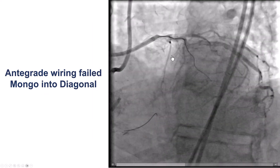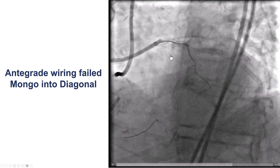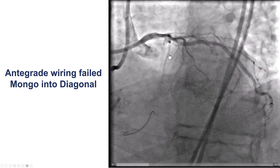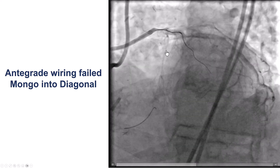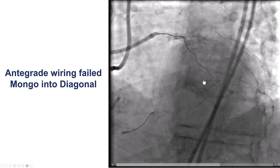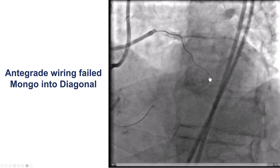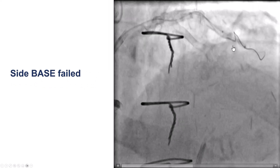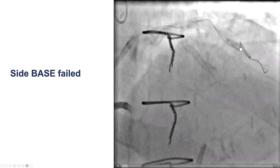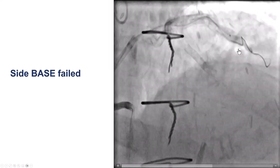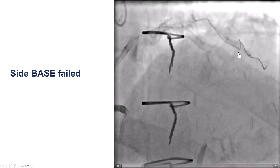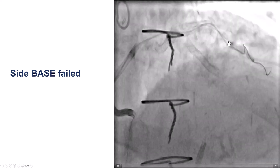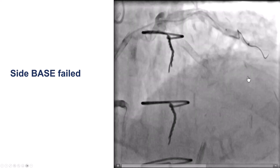We decided first to try to cross using antegrade wiring or dissection re-entry in a short segment. We used the Gladius Mongo, but this kept on entering into a diagonal branch of the proximal cap. We did the side branch technique — put a balloon in the side branch and tried to advance a guide wire along the course of the LAD — but we were unable to get a knuckle going down the LAD.